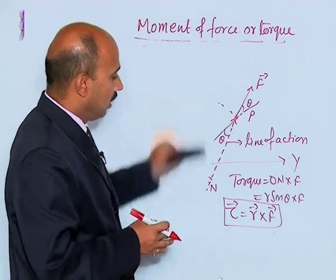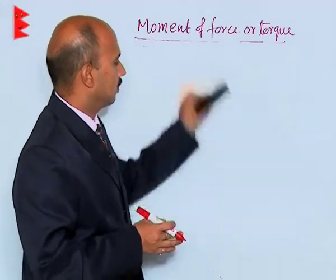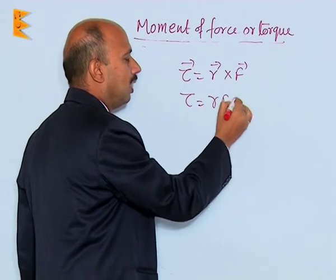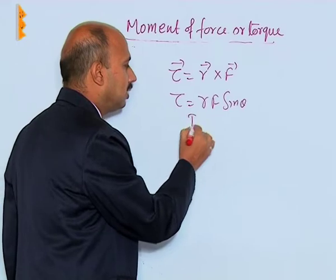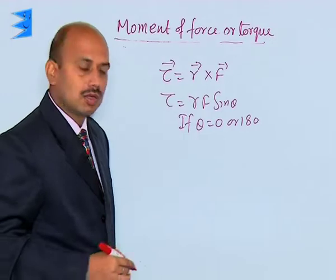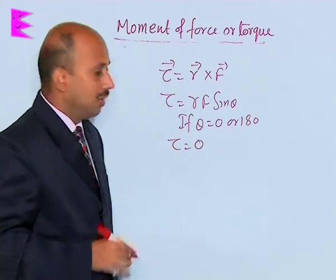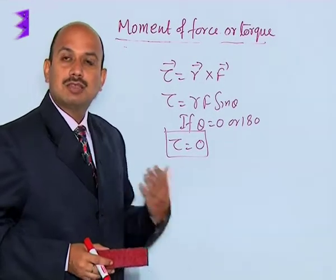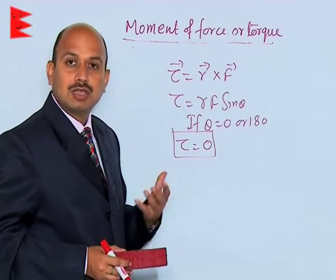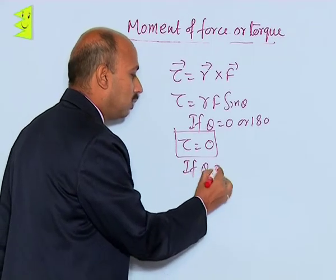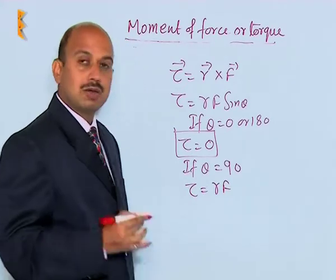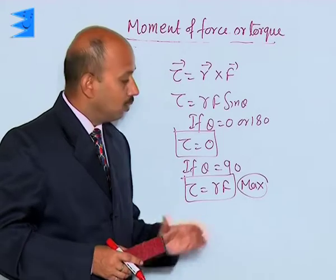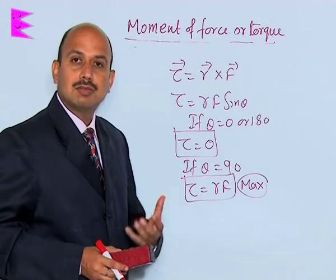We can write torque tau equals R cross F, or tau equals R F sin theta. If theta equals 0 or 180 degrees, torque equals zero — meaning if the force is parallel or anti-parallel to the position vector, there is no rotational effect and no rotational motion is produced. If theta equals 90 degrees, torque equals RF, since sin 90 equals 1, and this is the maximum torque. That is why applying a perpendicular force at the outer edge of a door opens it most easily.